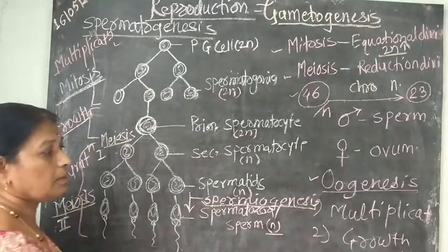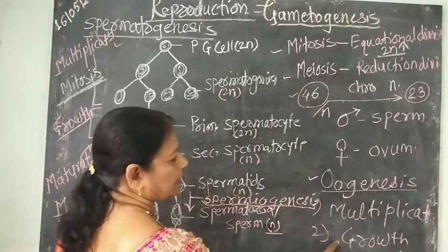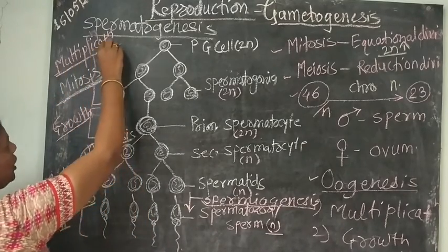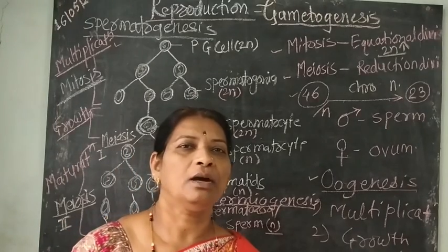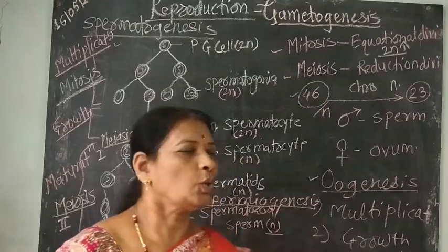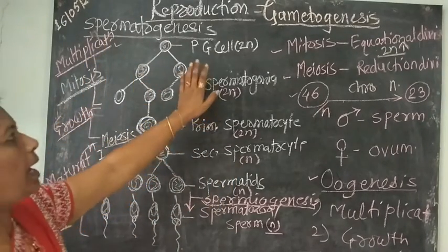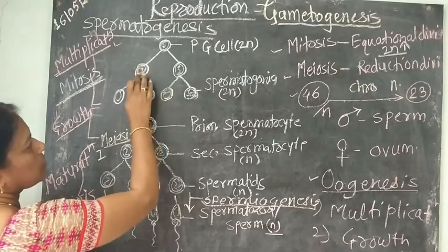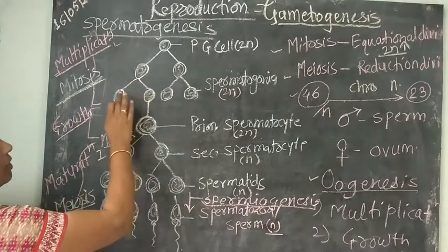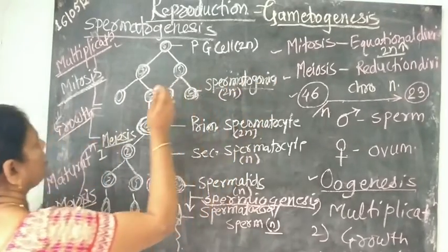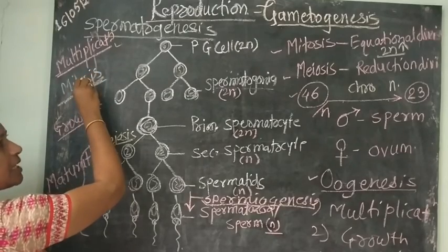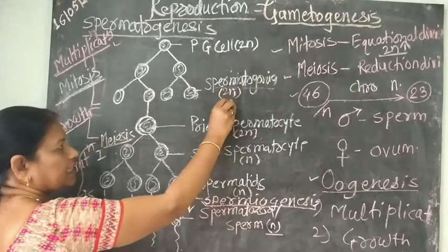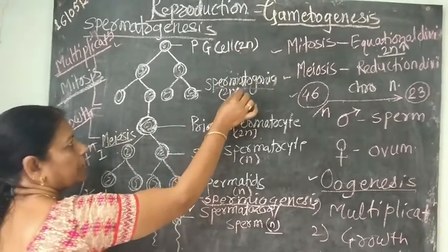This process is completed in three phases: the first is multiplication, the second is growth, and the third is maturation. In the multiplication phase, cells undergo division and multiply in number. The primordial germ cell of the seminiferous tubule, which is diploid in nature, divides into two cells; those two cells again divide to form four cells. These cells are known as spermatogonia and they undergo mitosis — the first stage of cell division — so the chromosome number remains the same. Diploid primordial germ cells form diploid spermatogonia.